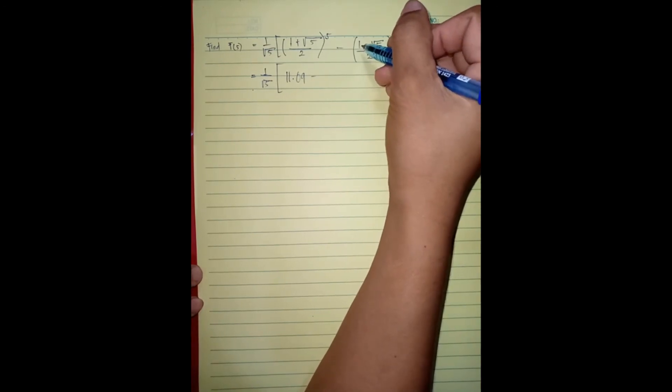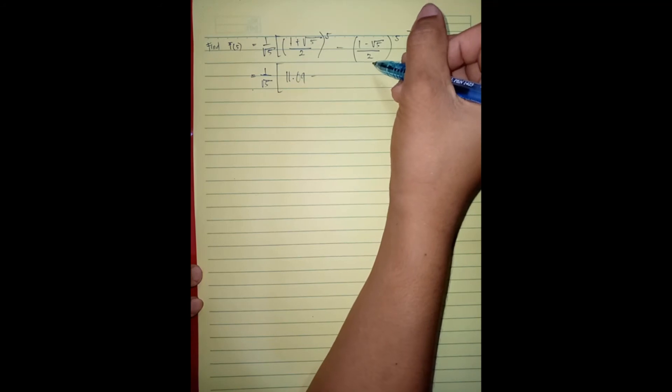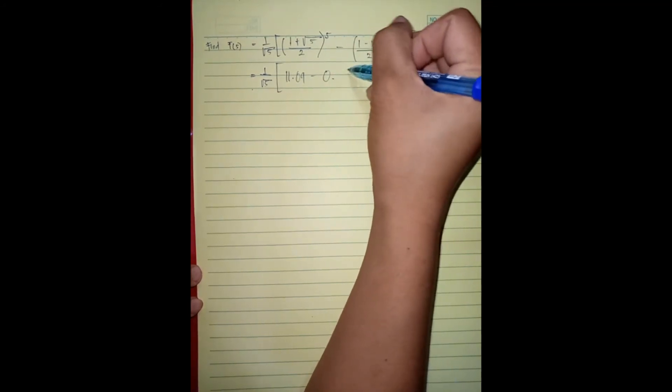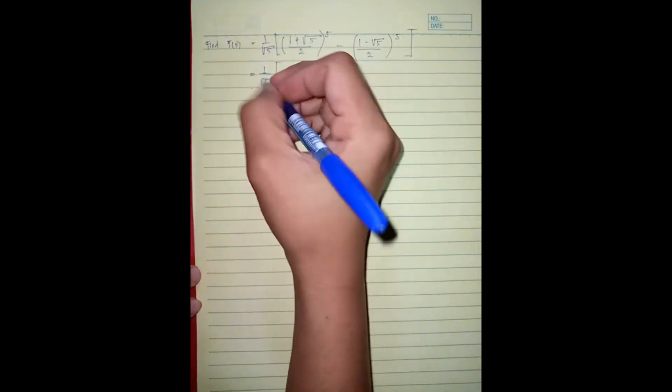One minus square root of five divided by two, the answer raised to five is nakakuha tayo ng 0.09. So i-minus natin itong dalawa.